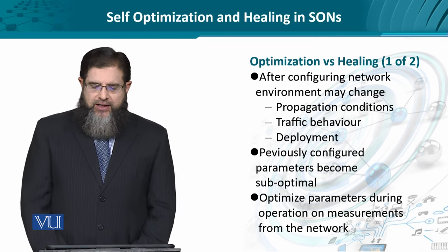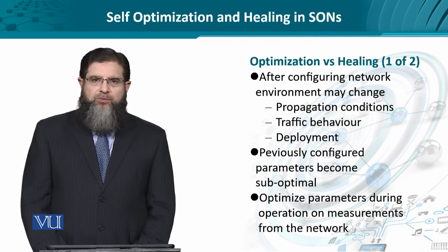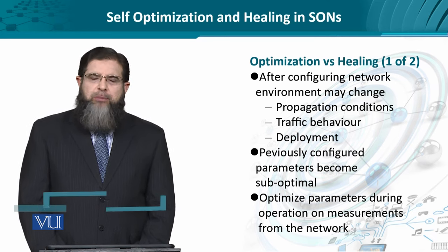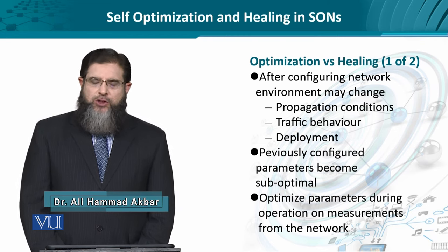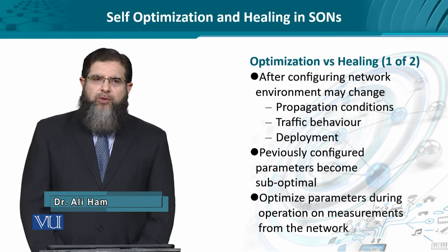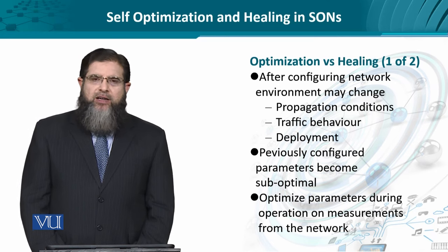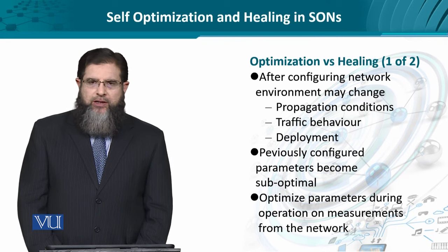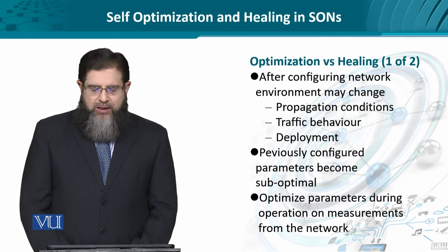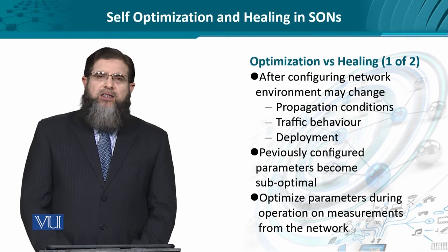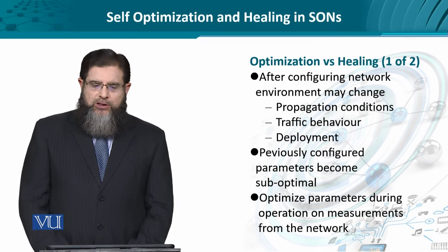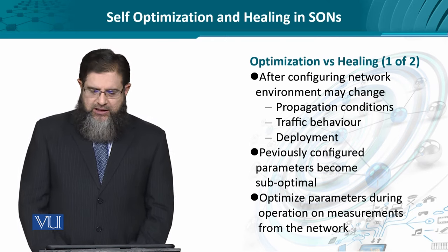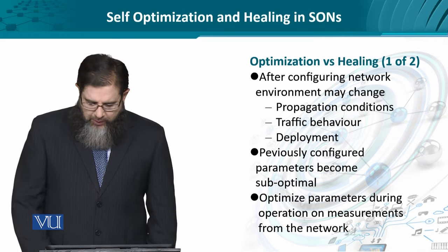Once a network has been initially configured, the network environment and parameters could change. For example, propagation conditions could change due to impediments, obstructions, fading sources, etc. Traffic behavior could change from sporadic to streaming traffic, and the deployment could also change — for instance, newer deployments or disappearance of a deployment causing interference. So the previously configured parameters sometimes cause interference and sub-optimality. The optimization is actually the re-parameterization of network elements based on live measurements.